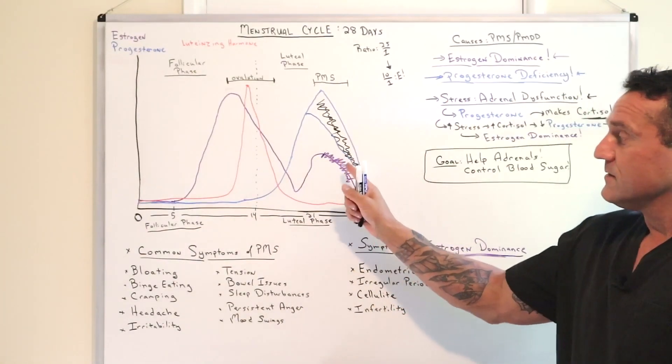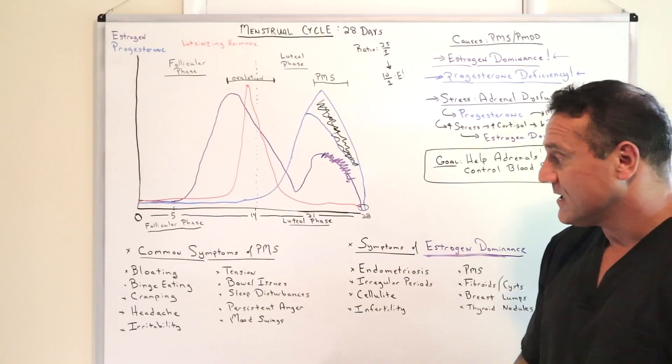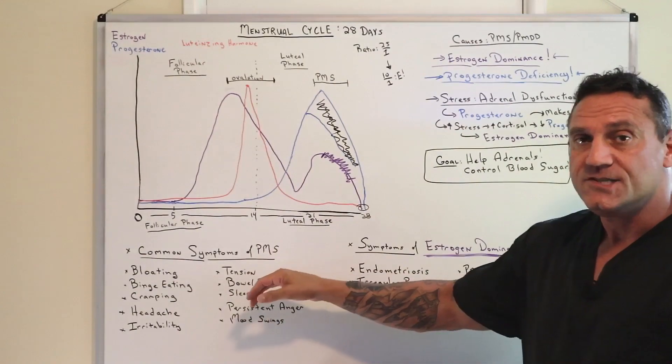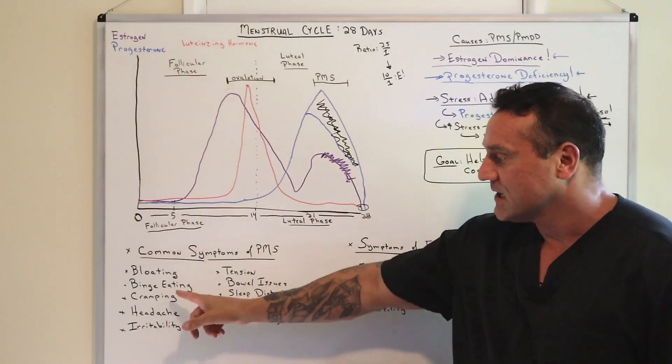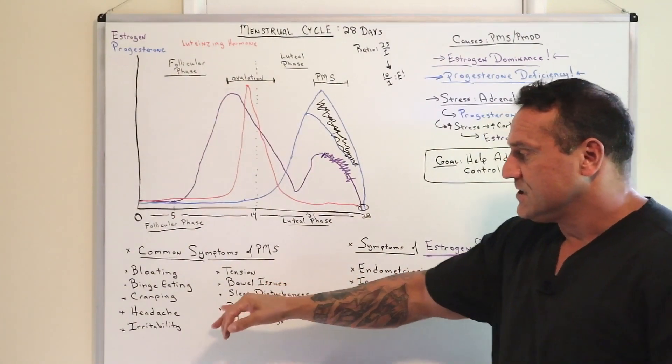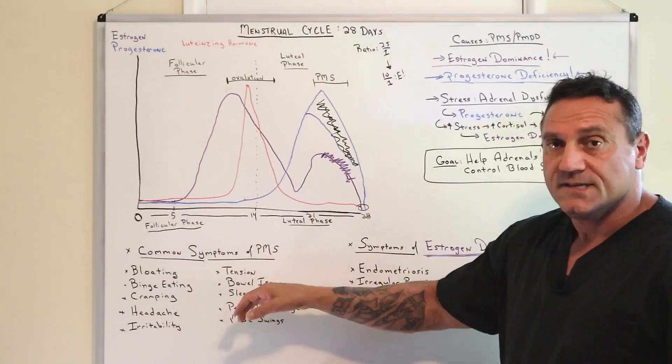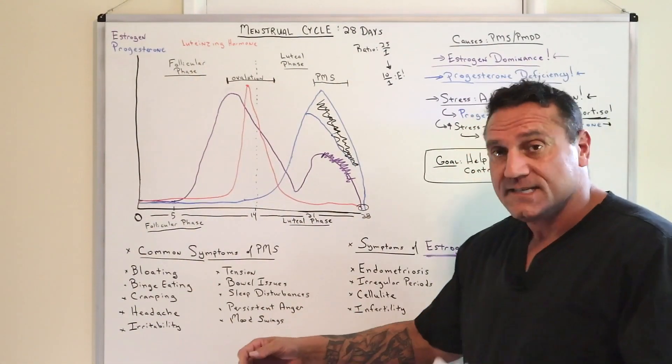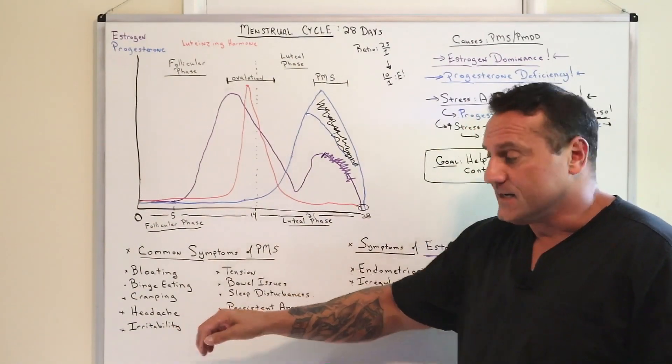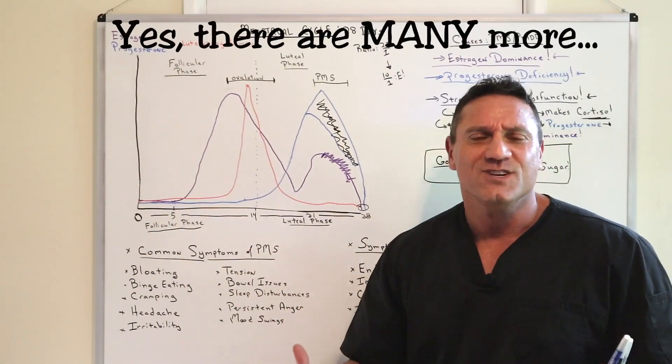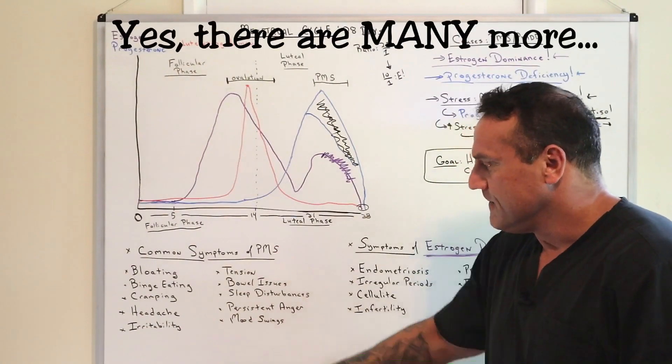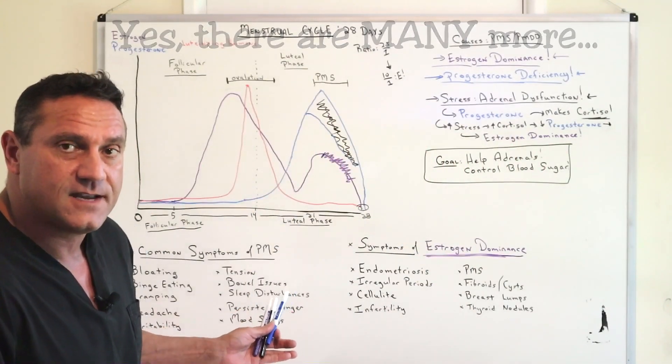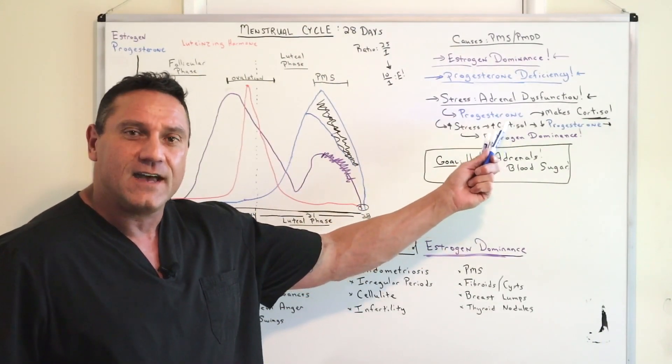So the fluctuations in estrogen cause common symptoms of PMS: bloating, tension. The fluctuations in blood sugar cause binge eating, bowel issues, cramping, sleep disturbances. You're full of stress, you can't sleep. If you can't sleep, you can't repair yourself. And it's a never-ending cycle. Headaches, persistent anger. If you're stressed out, you're always angry. PMS, irritability, mood swings, common symptoms. Now again there's more, but these are common symptoms of PMS.